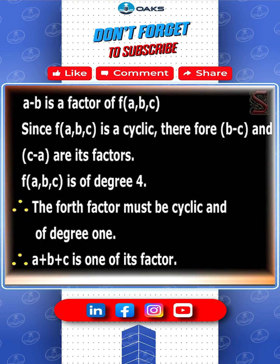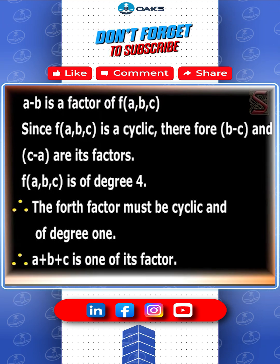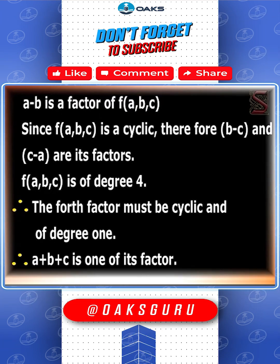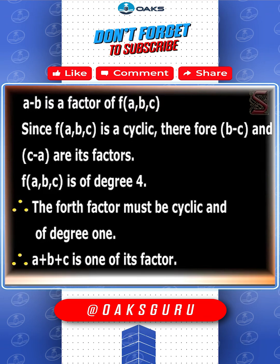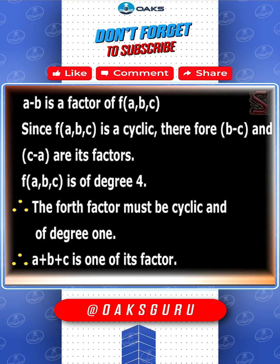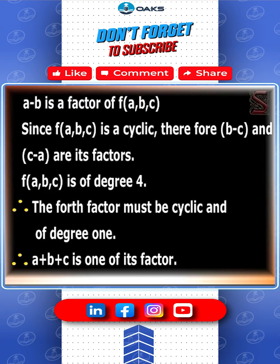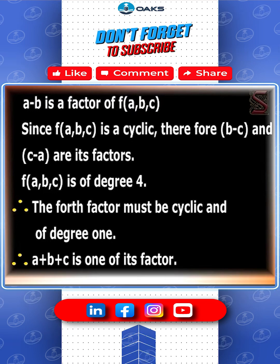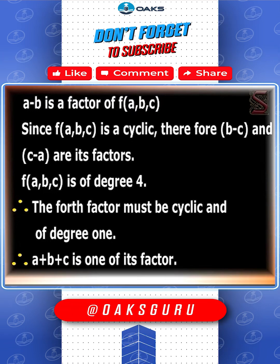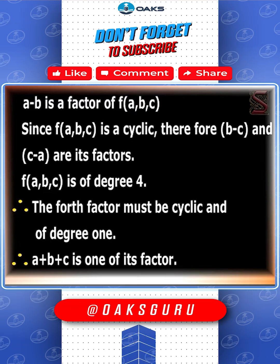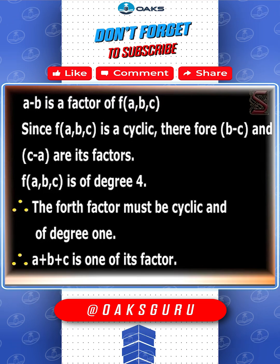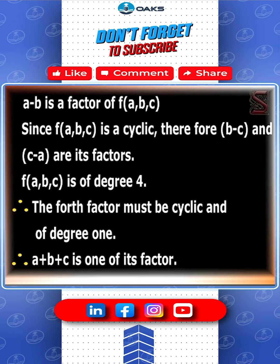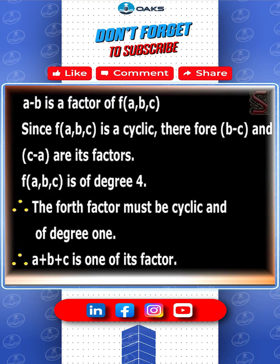Since (a-b) is a factor of f(a,b,c) and f(a,b,c) is cyclic, we conclude (b-c) and (c-a) are also its factors. Moreover, f(a,b,c) is of degree 4. Therefore, the fourth factor must be cyclic and of degree 1. Therefore, (a+b+c) is also its factor.